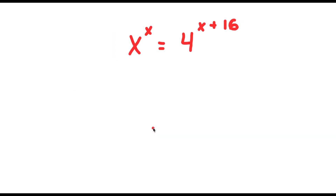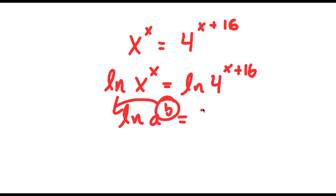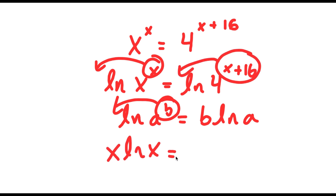In this problem, I have x to the power of x equals 4 to the power of (x plus 16). I'll start by taking the natural log of both sides: ln(x^x) equals ln(4^(x+16)). Using the power rule for logarithms — ln(a^b) equals b times ln(a) — I can move x to the front on the left and (x plus 16) to the front on the right, giving x times ln(x) equals (x plus 16) times ln(4).